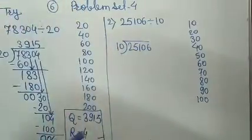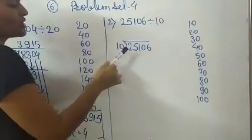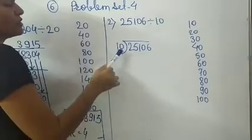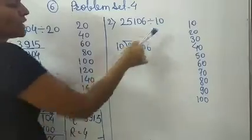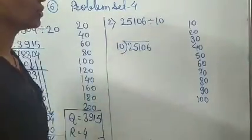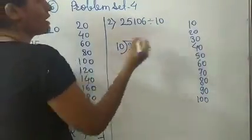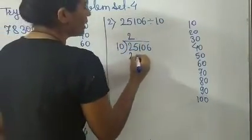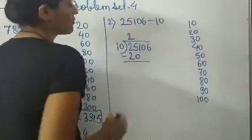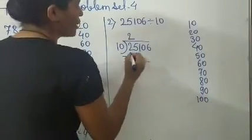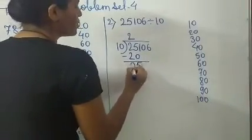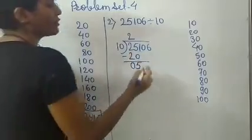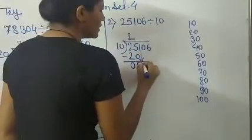So, first number — what is given? 2. But 2 is smaller than 10, so now we take 25. In the table of 10, is 25 there? No. So 10 twice is 20 — 2 is here and 20 will be here. Subtract: 5 minus 0 is 5, 2 minus 2 is 0. Now the next number is 1; we have to take that down.